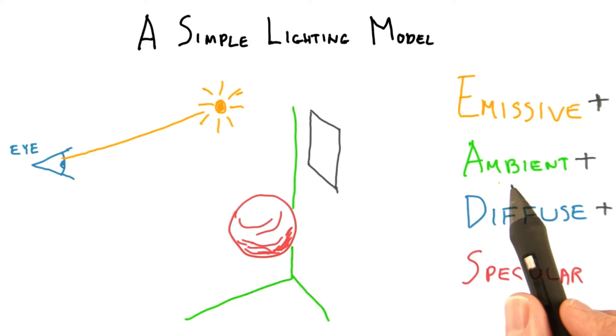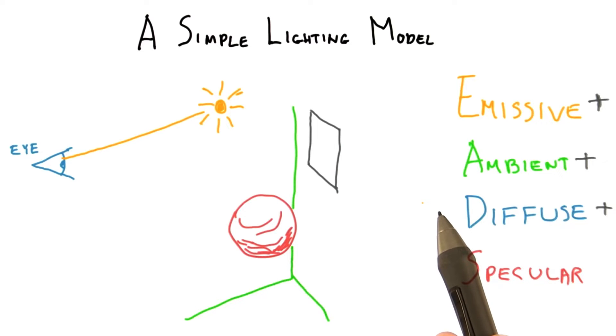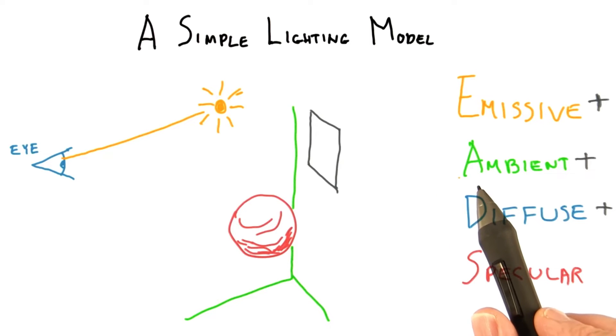The second component, ambient, is a fudge factor, something added in so objects look better, especially in areas that are not directly lit. You'll see it in various systems controlled in various ways. When all is said and done, the ambient term helps compute a constant color value that is added to the fragment's final color.